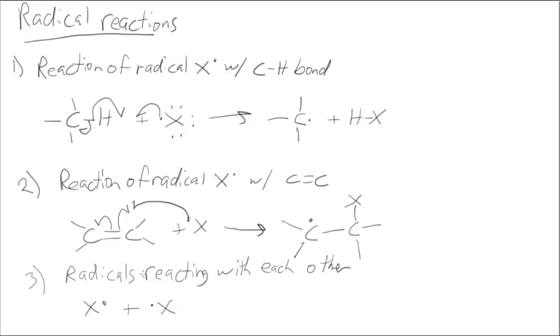The third type of reaction we'll look at with radicals are radicals reacting with each other. In this example I have two halogen radicals, where again I'm only showing the radical electron, not all the other lone pairs. So in this case each one gives one electron to form a new bond between the two, and in the end we have no radical.